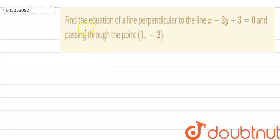In this question we have to find the equation of the line perpendicular to the line x minus 2y plus 3 equals 0, and passing through the point (1, -2).